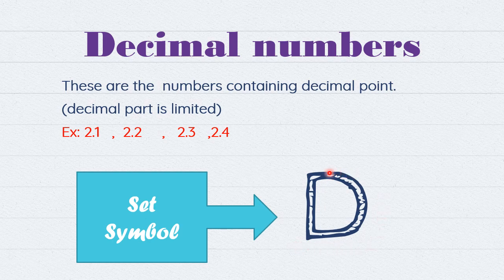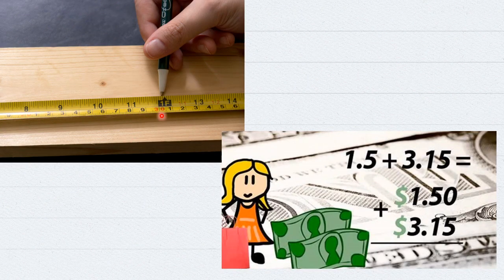Next are decimal numbers, set D. Decimal numbers are numbers containing a decimal point, for example 2.1, 2.2, 2.3, etc. The decimal part — the part after the point — is limited, meaning it ends. We use decimals when measuring, for example using a meter, or when counting money.